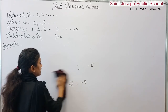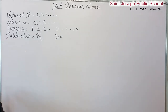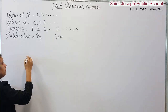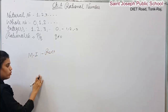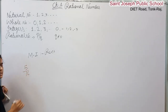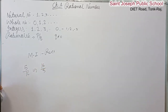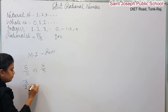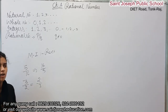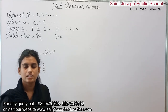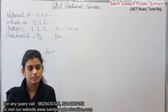Now we talk about multiplicative inverse. Multiplicative inverse means reciprocal. For example, the multiplicative inverse of 5 by 16 is 16 by 5. And the multiplicative inverse of 3 by 2 is 2 by 3. I hope you understood. In the next class, we will discuss the rest of the introduction. Thank you for watching.